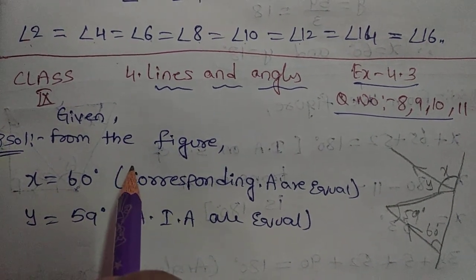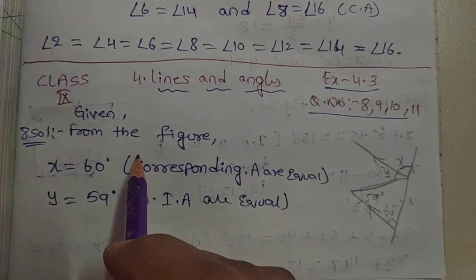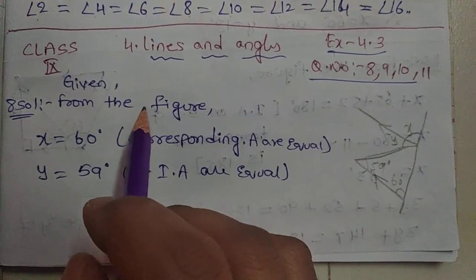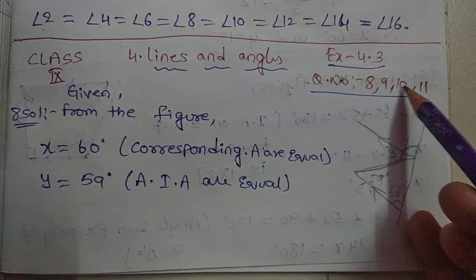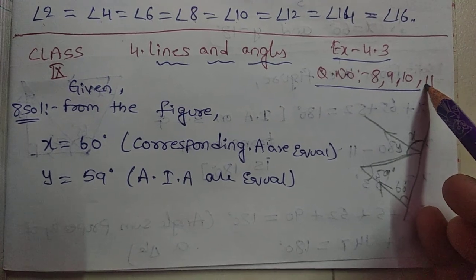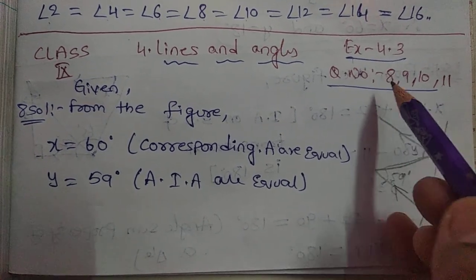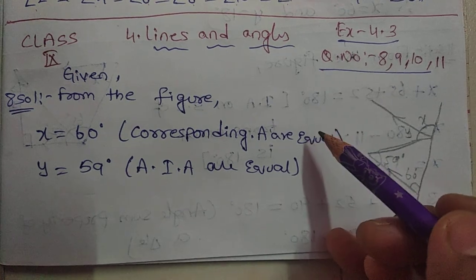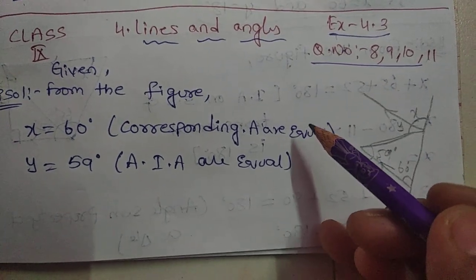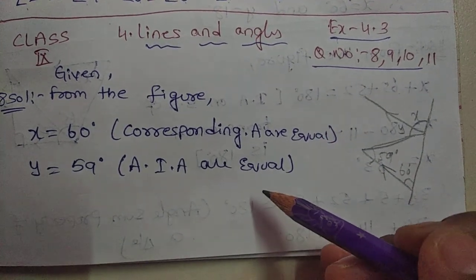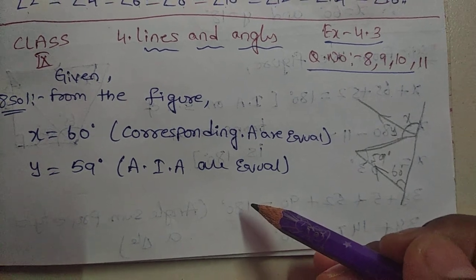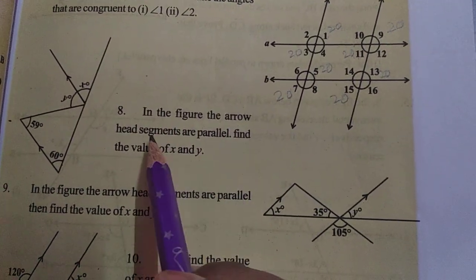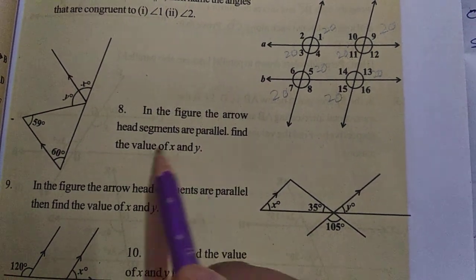Hi guys, welcome to my channel. In this video I will explain the ninth class math, fourth chapter, Lines and Angles, Exercise 4.3. There are questions 8 through 11 I will explain in this video. Before this video, problems five, six, and seven I already explained — if you want that link, I will give the link in the description box. Okay, so eighth problem: in the figure, the arrowhead segments are parallel, find the values of x and y.